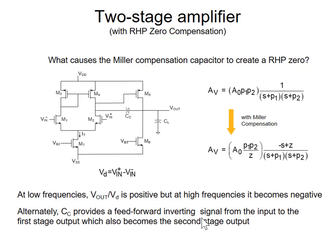With the Miller effect compensation capacitor, we end up with the right half plane zero. The compensation capacitor provides a feed-forward path from the input to the output. At higher frequencies, there's a direct feed-forward path that bypasses the amplifier stages. If we could kill that feed-forward path at high frequencies, maybe we could kill the problem. If there's a way to prevent that feed-forward path at high frequencies, then the right half plane zero will disappear. We can break that path by putting a resistor in series with the capacitor.